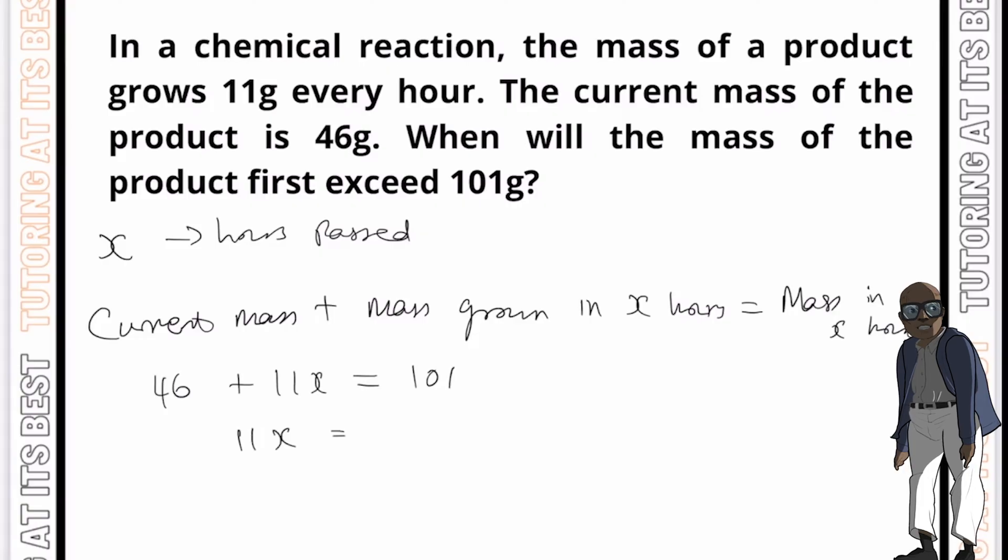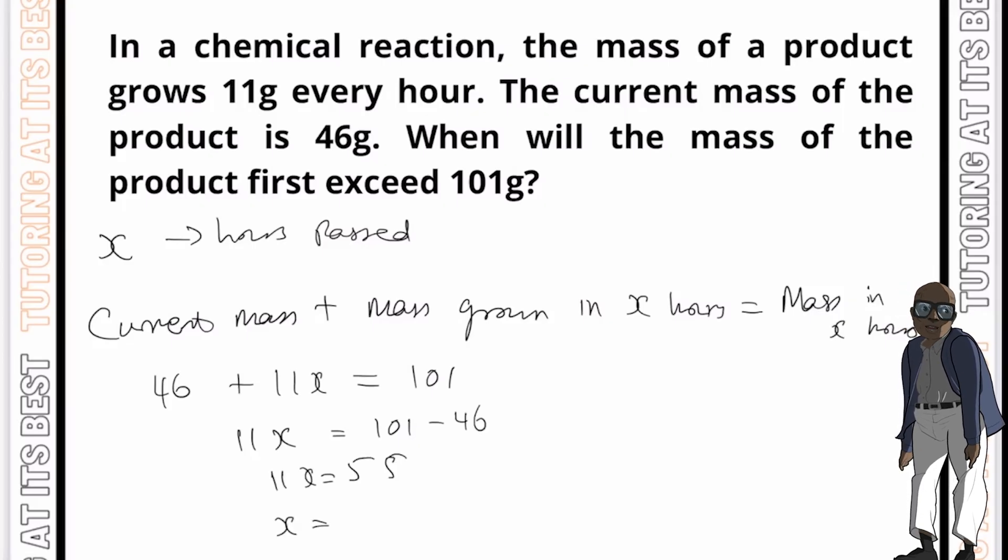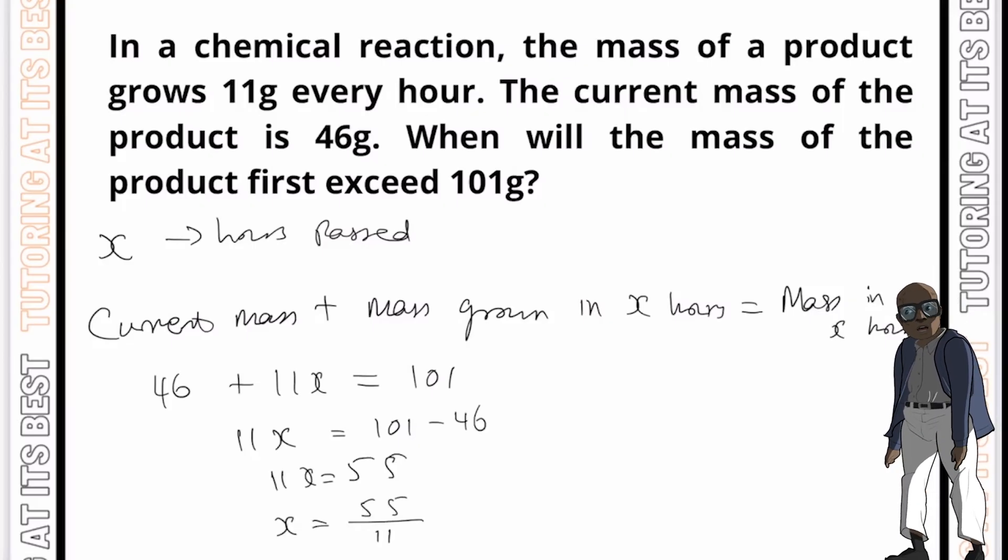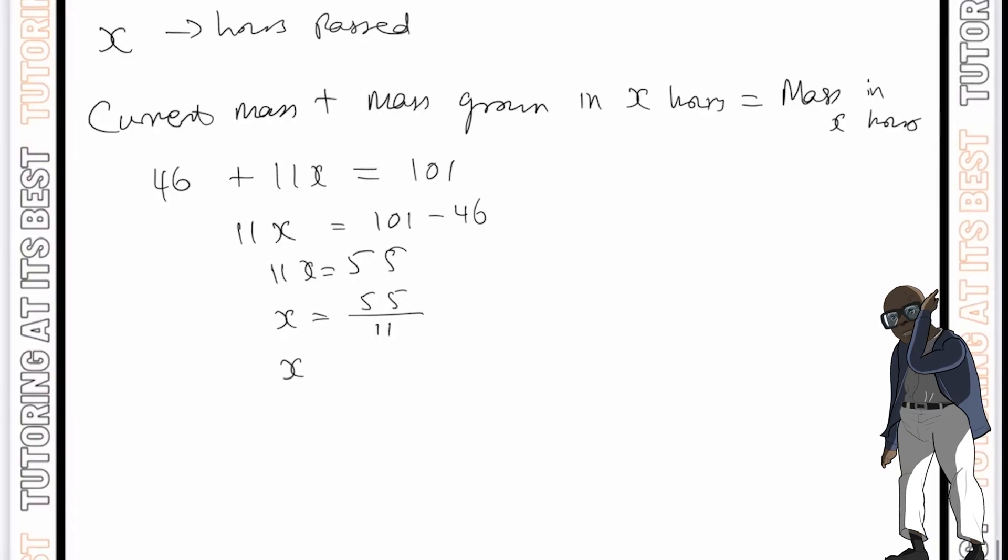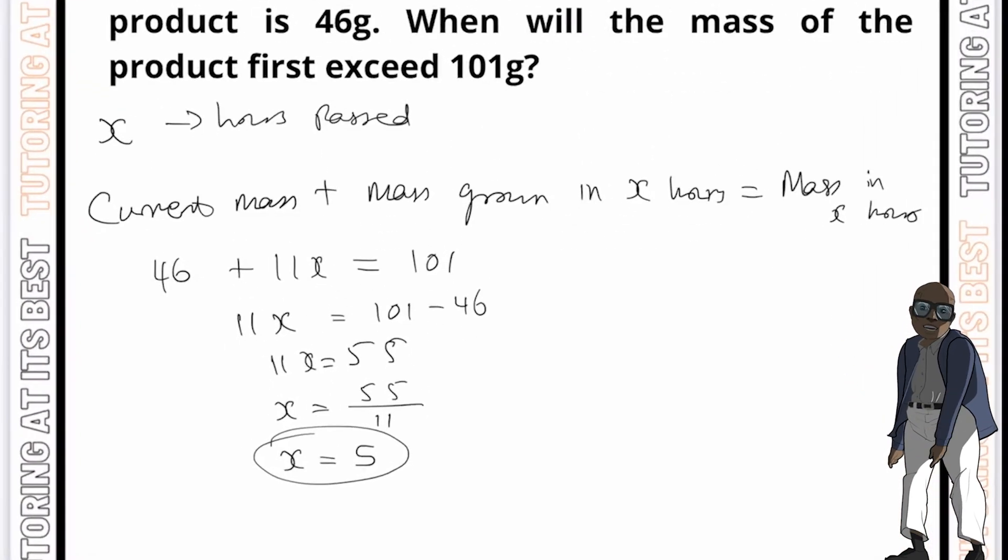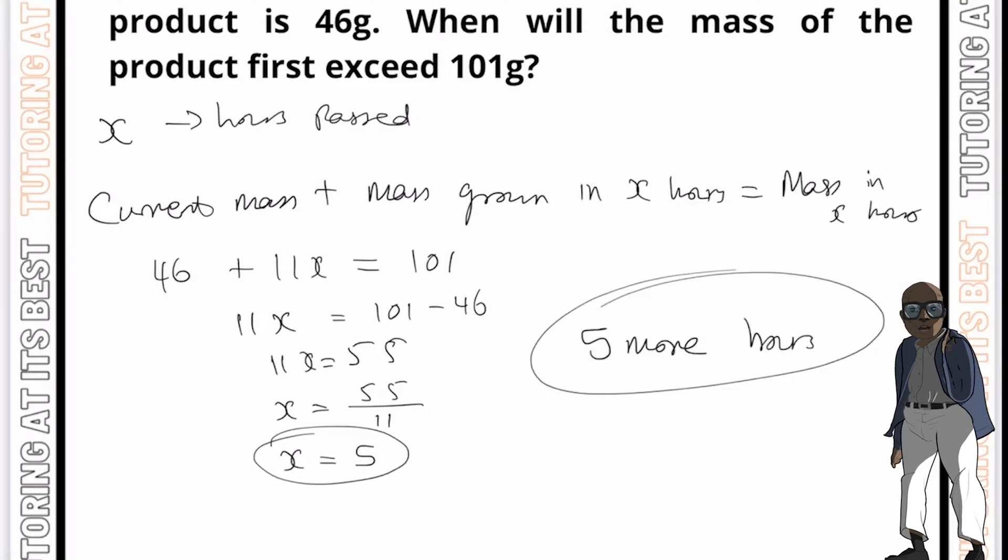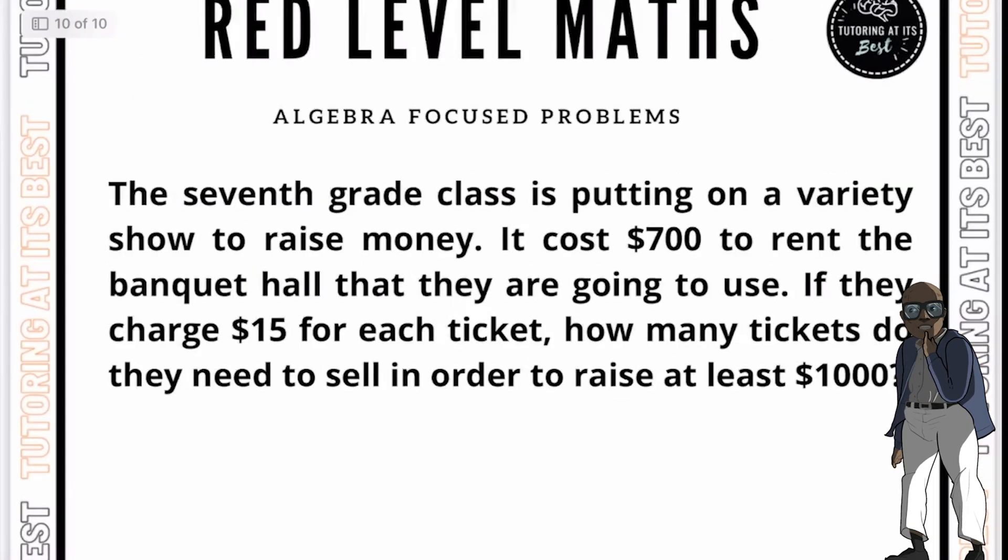So if we take 11x, which equals 101 minus 46, that gives us 55. And so now x is 55 divided by 11. So we can simply say x equals 5. So we now know that it will take 5 more hours for the mass of the product to exceed 101 grams. And there we are. Beautiful. Okay, let's move on to our final question.